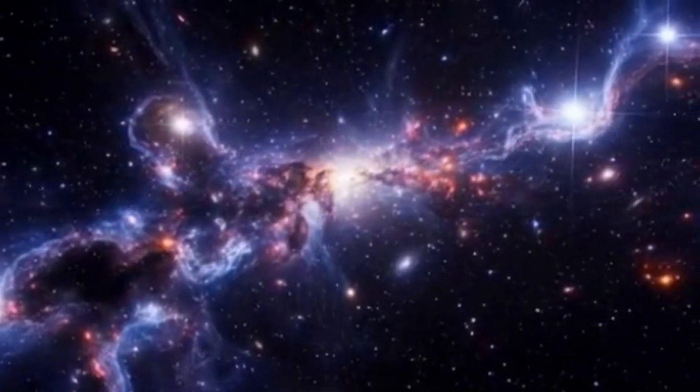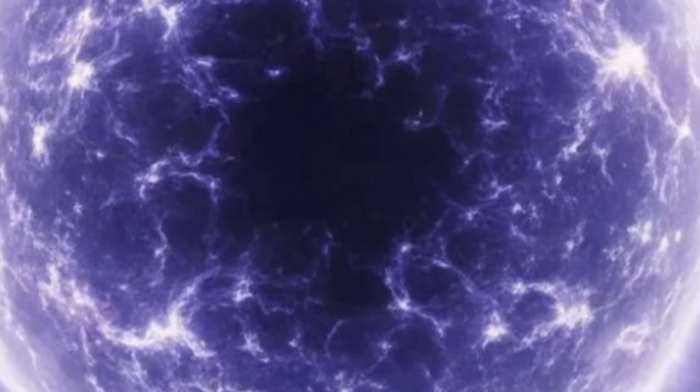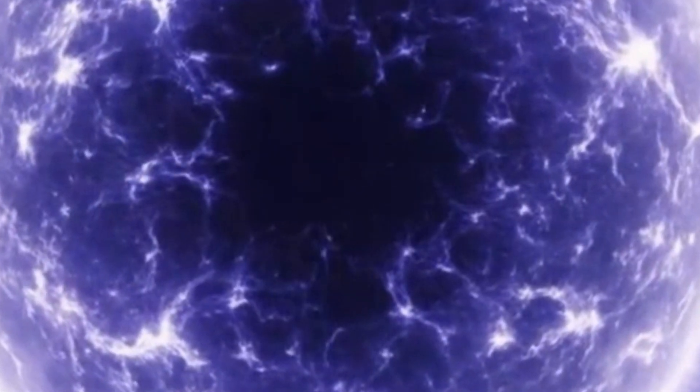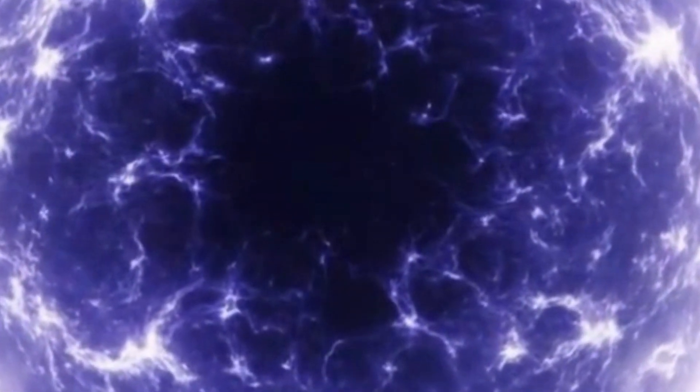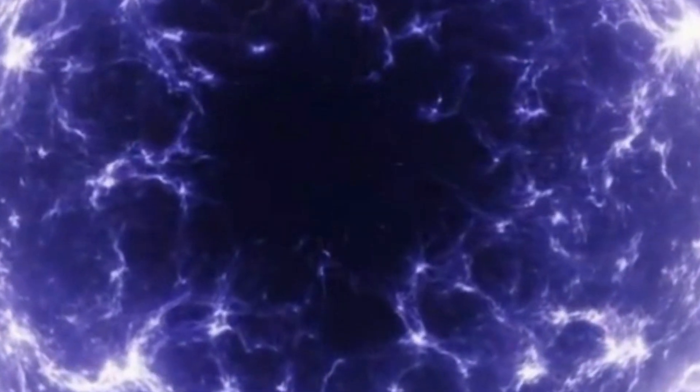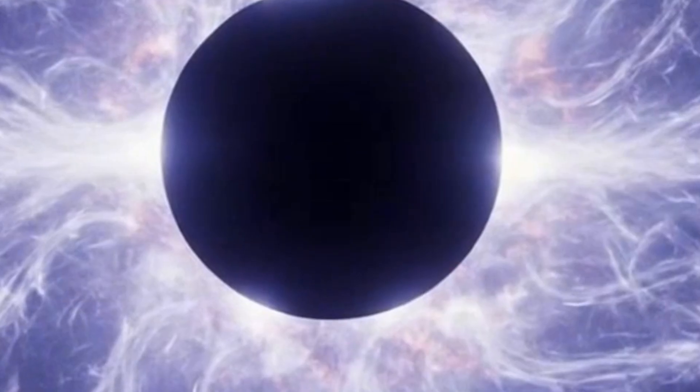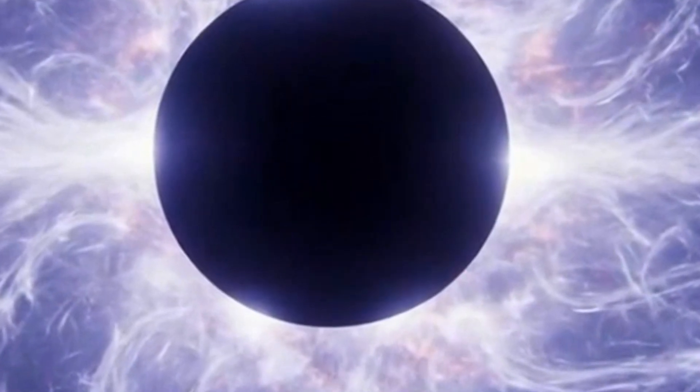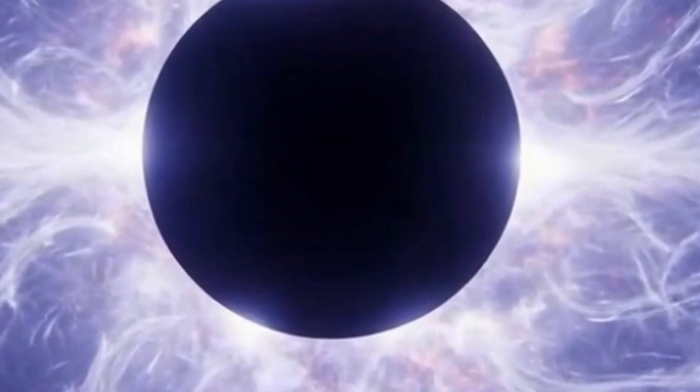Now imagine standing here on Earth, looking deep into the universe through Webb's powerful mirror. The farther out you look, the farther back in time you're seeing, and the faster those galaxies appear to recede. At a certain distance, there comes a boundary, a region of space where galaxies are moving away from us at exactly the speed of light.